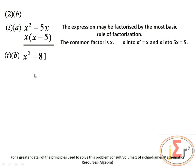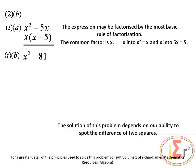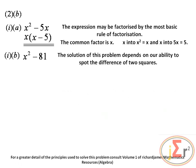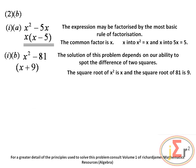Do not forget our good friend the difference of two squares. The solution of this problem depends on our ability to spot the difference of two squares. We recognize that we have a difference of two squares. The square root of x squared is x, and the square root of 81 is 9. In one bracket we have (x plus 9), and in the other bracket we have (x minus 9).